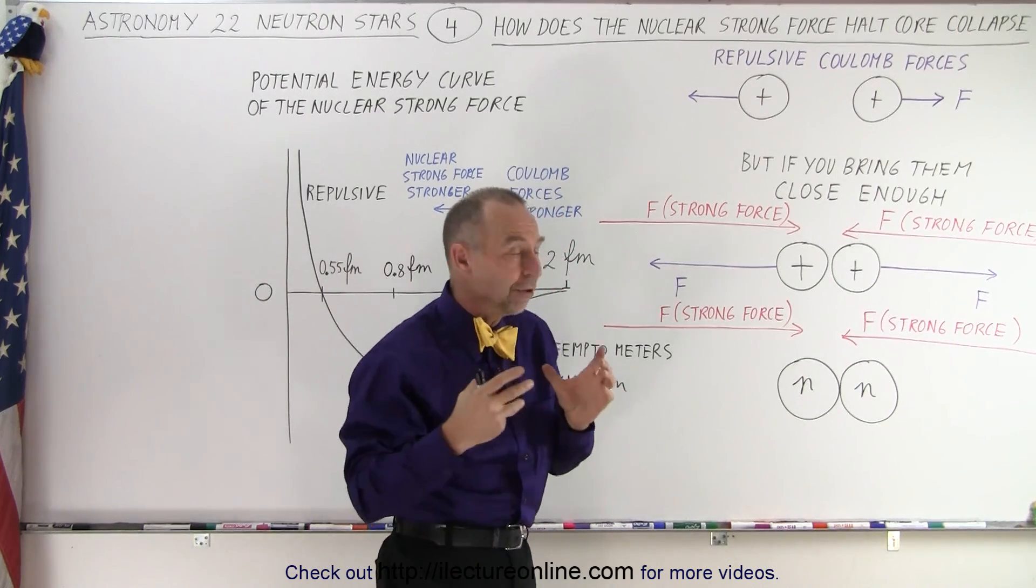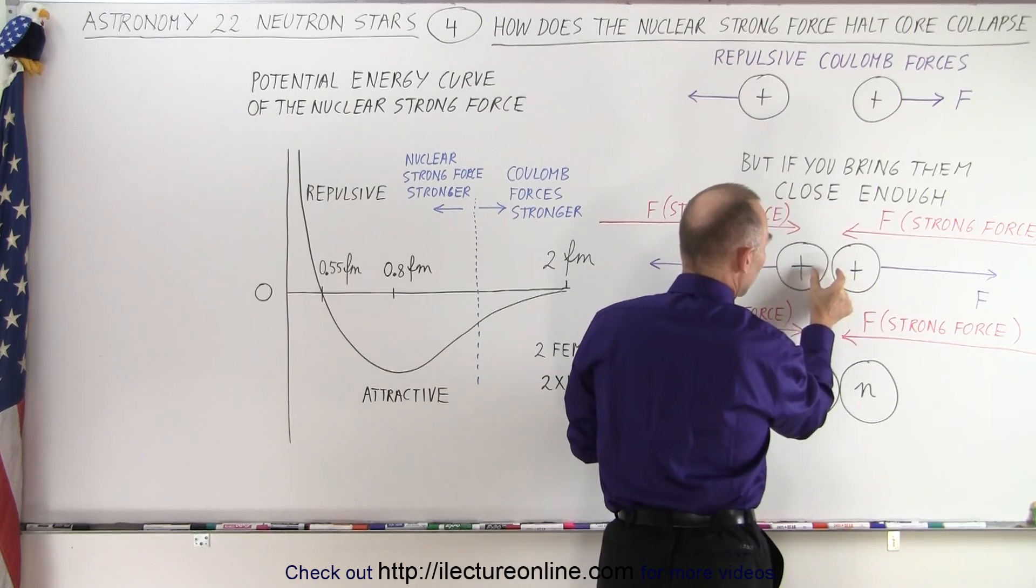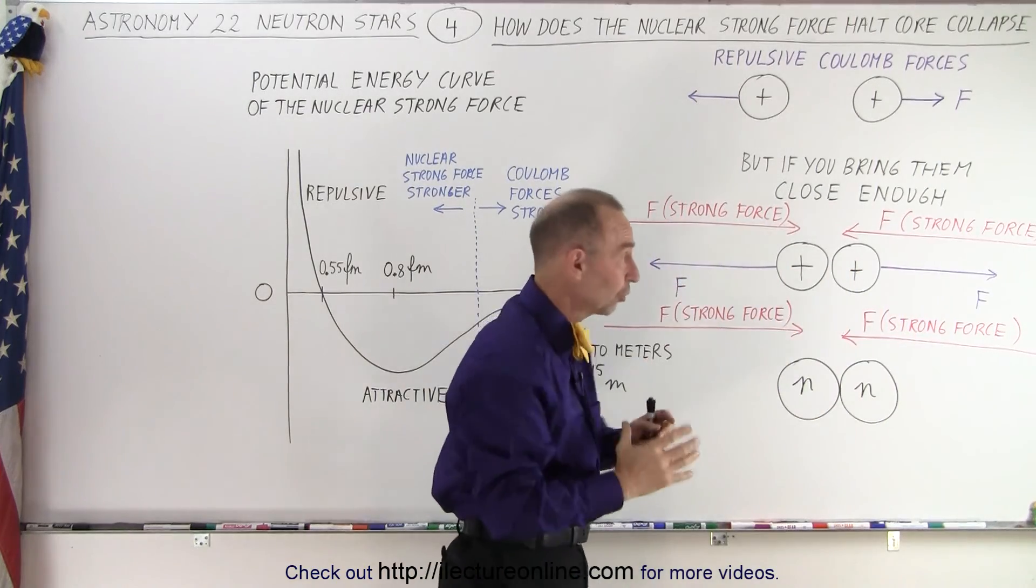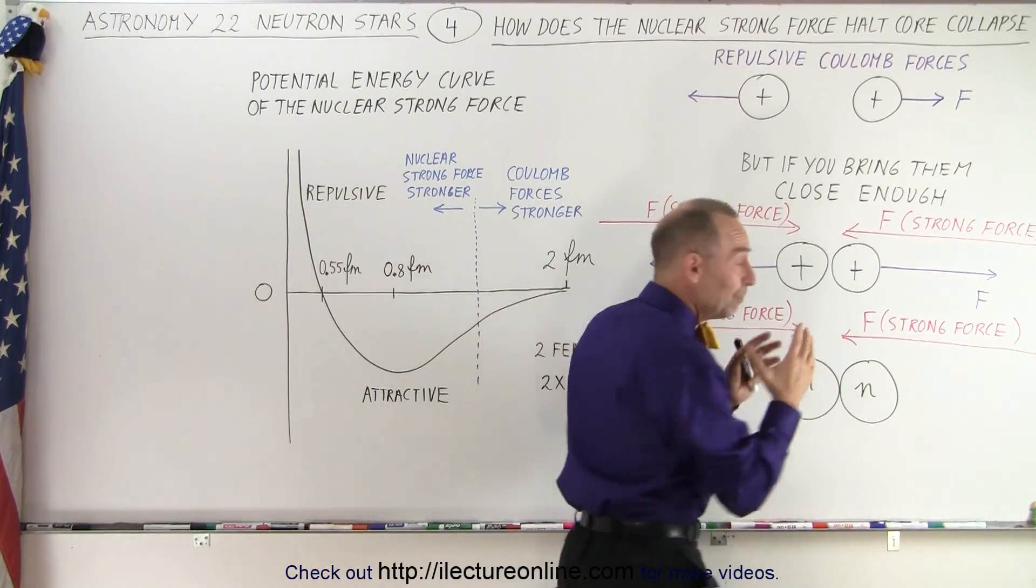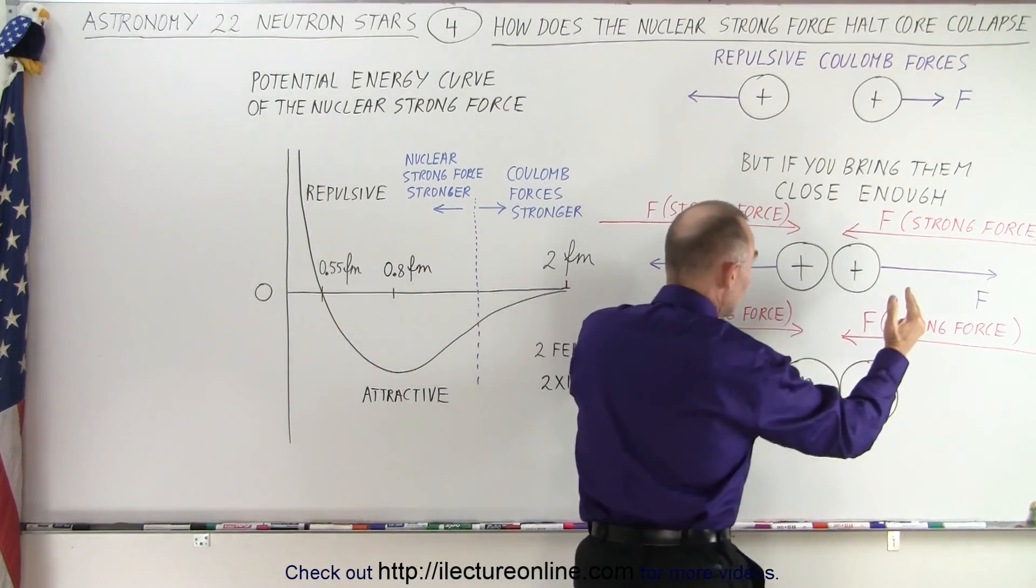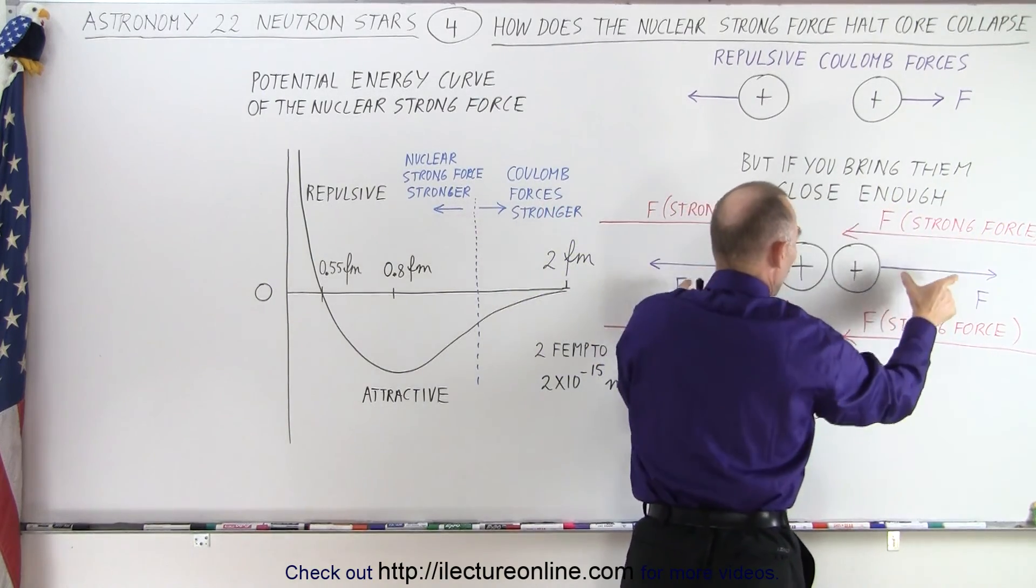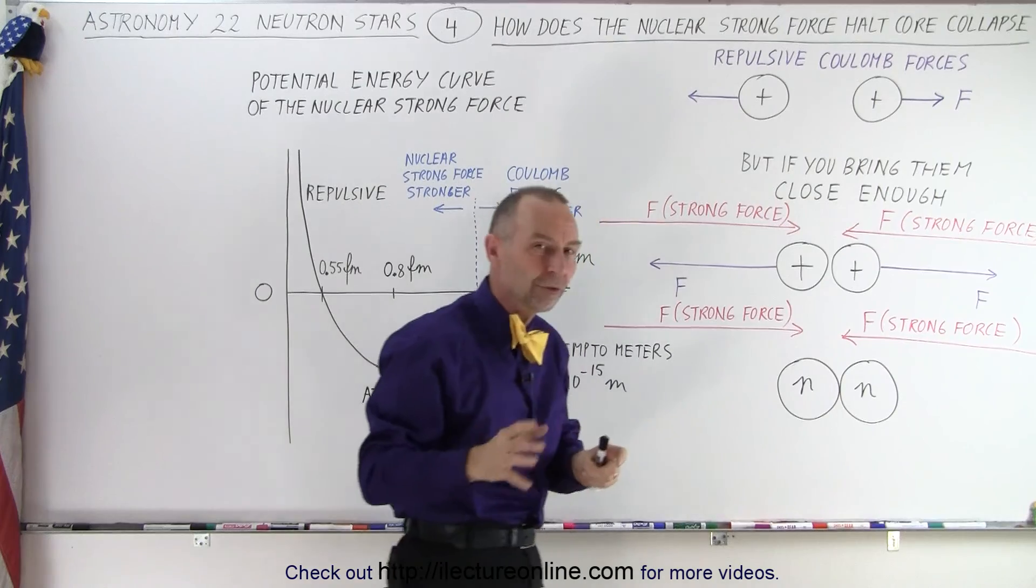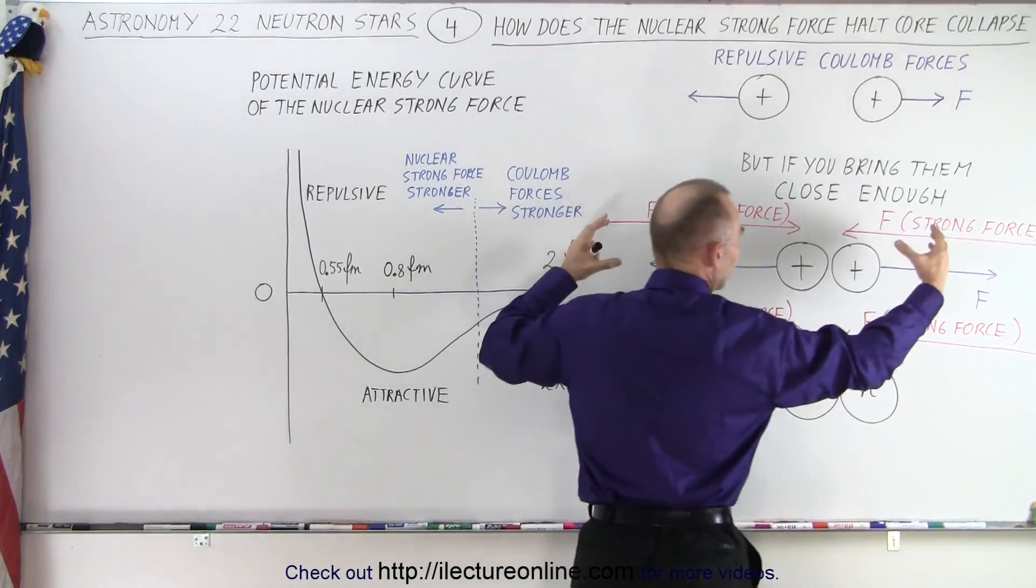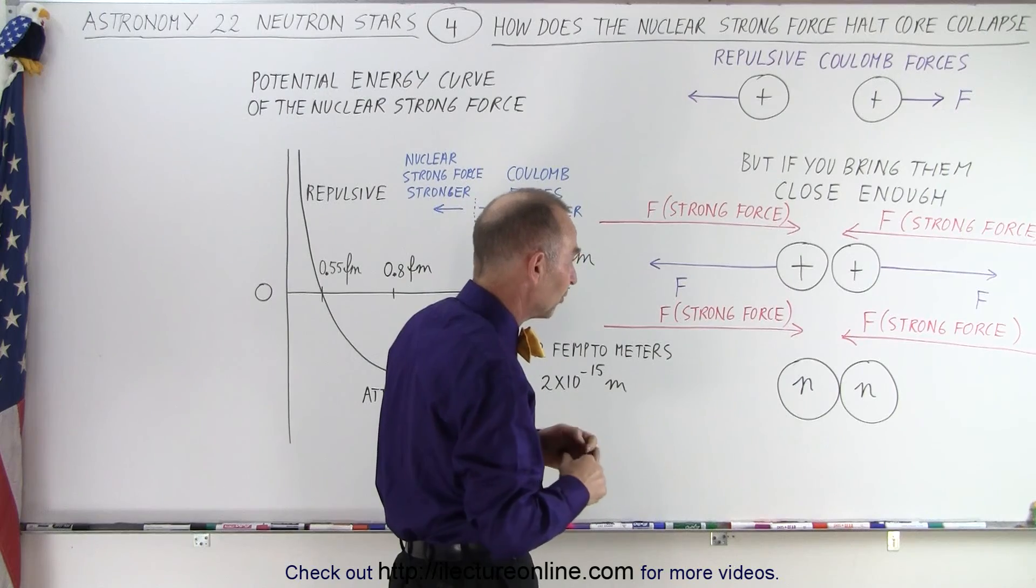So what has to happen is, for us to be able to bring them together, you have to bring them close enough. Once you bring the two protons close enough, even though the Coulomb forces keep getting bigger and bigger as they get closer and closer, at some point, very suddenly, because the nuclear strong forces only act at very short distances, when you bring the two protons close enough, the strong force all of a sudden gets strong enough to overpower the repulsive forces, the Coulomb forces between the two protons. And then the strong forces are then able to keep the two protons together. That's part of the nuclear fusion process that happens inside the core of the sun.